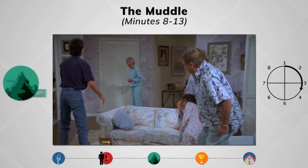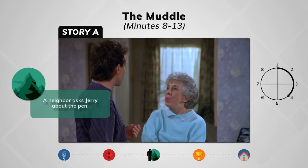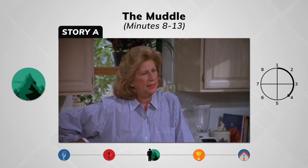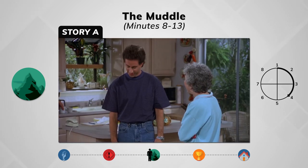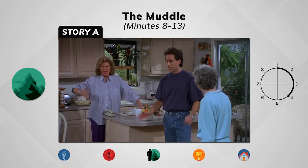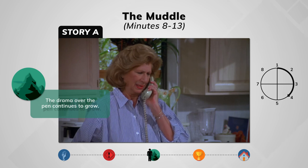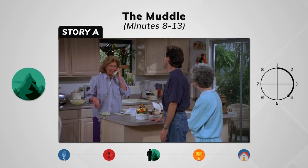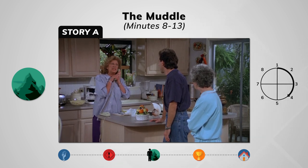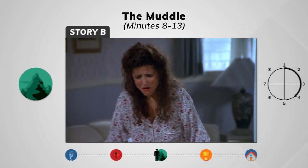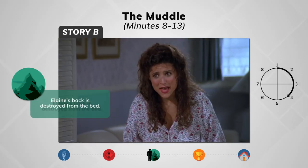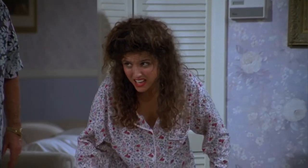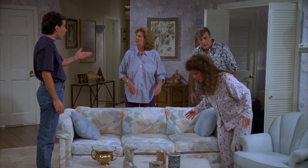In the Seinfeld episode, a neighbor comes to ask about the pen — this was Jerry's mother's worst fear. Now people are talking about the pen that Jerry shouldn't have taken from Jack. Someone even calls asking about Jerry's new pen, and Jerry's mother insists he give it back. The B story continues as Elaine's back is now destroyed from sleeping in the uncomfortable bed.